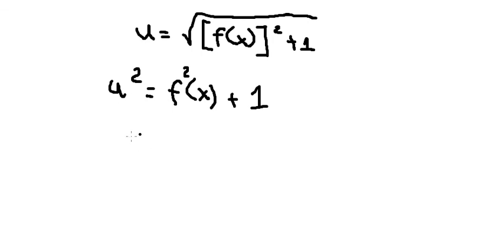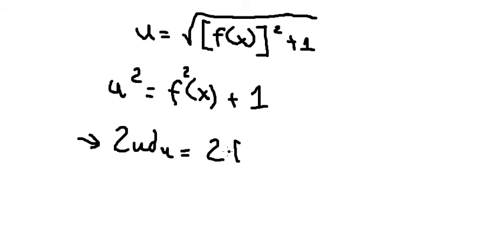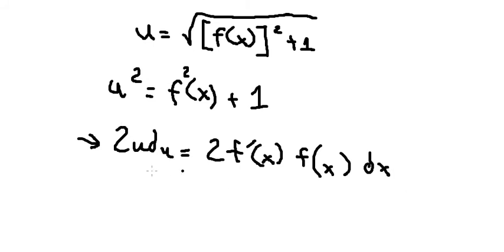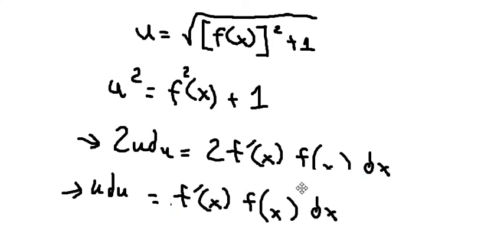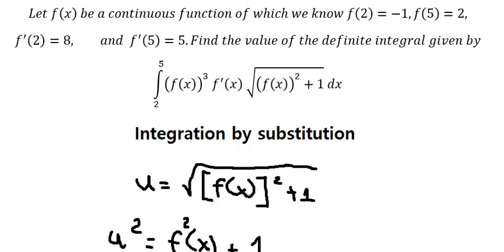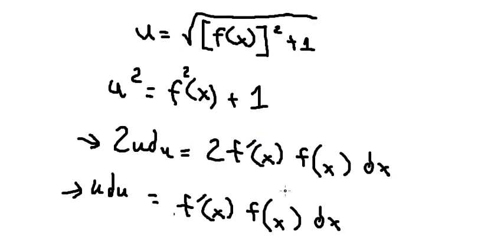Now we take the first derivative of both sides. The first derivative of u² gives us 2u du. On the right side, the first derivative gives us f'(x) dx. Next, we divide both sides by 2.